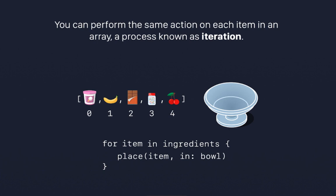Let's say you have an array and you want to perform some actions on it. Most likely you will be iterating through the array. Iterating means you start from the first element and repeat the process until the end of the array. In our case, we are going to place each item into a bowl. Since it is a repeated process on all array elements, we need a loop, and a for loop is the best way to iterate an array.